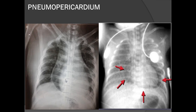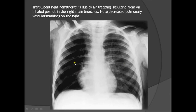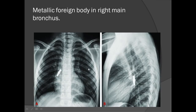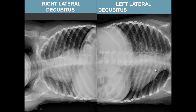Always suspect a foreign body in a child's X-ray whenever there is a difference in density between the two sides — one side appearing blacker than the other. Not all foreign bodies are radiopaque; most are radiolucent — rubber, batteries, buttons, and peanuts. To confirm, ask the patient to perform an expiratory view: air becomes trapped on the side with the foreign body.